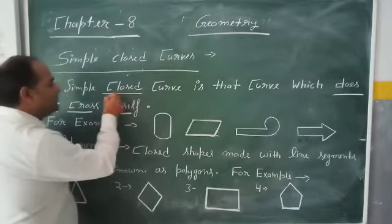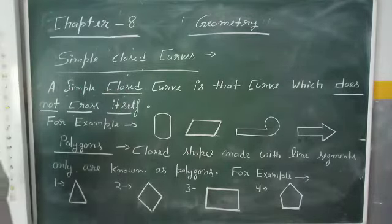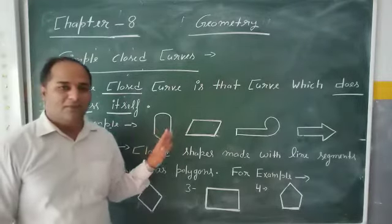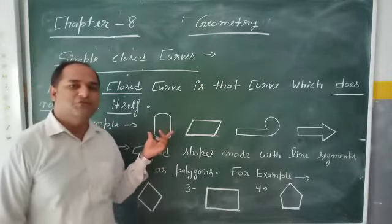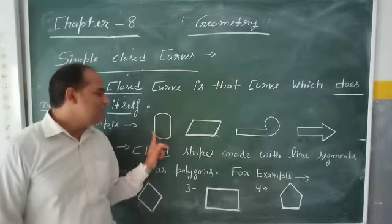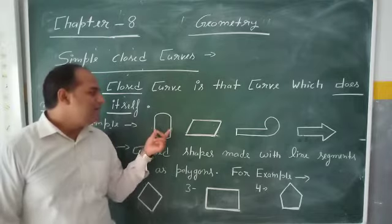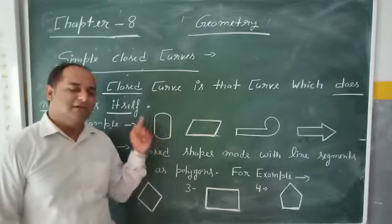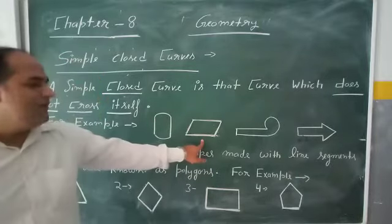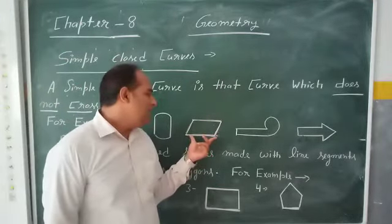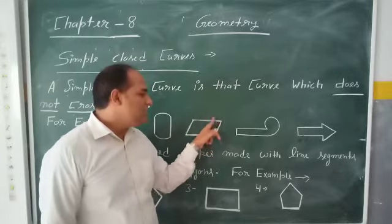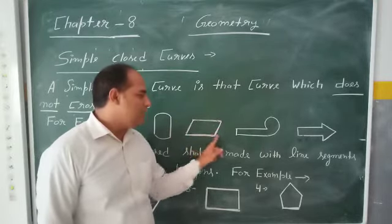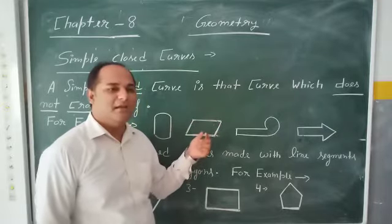Now, children, we will understand simple closed curve by example. You can see this figure — this figure shows a simple closed curve. This is a closed curve and does not cross anywhere, as you can see. So it is a simple closed curve. Now see this figure — it does not cross anywhere, and this figure is a closed curve, so this figure is also a simple closed curve.